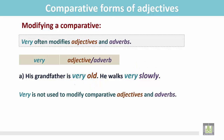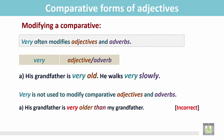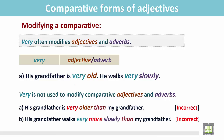Very is NOT used to modify comparative adjectives and adverbs. For example: 'His grandfather is very older than my grandfather' — we cannot use very before comparative adjectives like older; it is wrong. Similarly, 'His grandfather walks very more slowly than my grandfather' — very before more and the adverb slowly is also wrong.